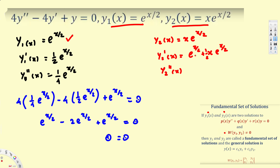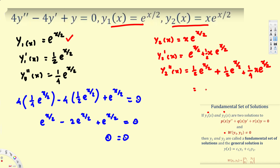For the second derivative, differentiating e^(x/2) gives (1/2)e^(x/2). For the term (1/2)x*e^(x/2) we again apply product and chain rules: differentiating x gives (1/2)e^(x/2), and keeping x while differentiating e^(x/2) gives (1/4)x*e^(x/2). Combining the two (1/2)e^(x/2) terms gives e^(x/2), so y''2 = e^(x/2) + (1/4)x*e^(x/2).